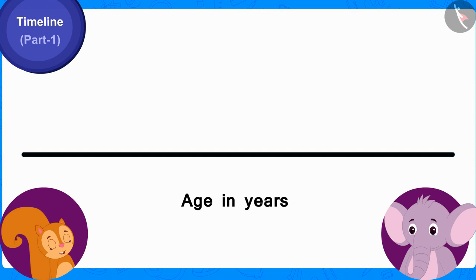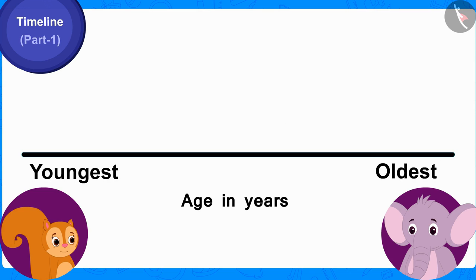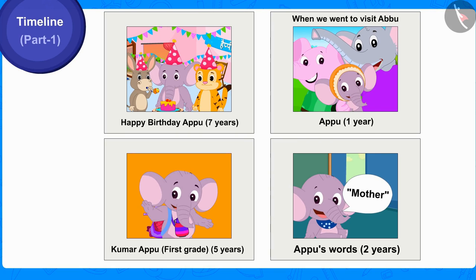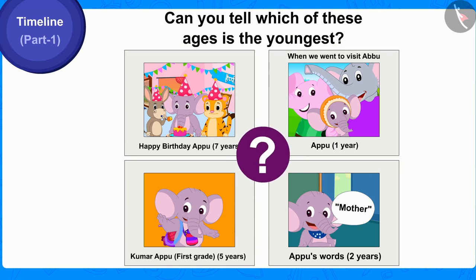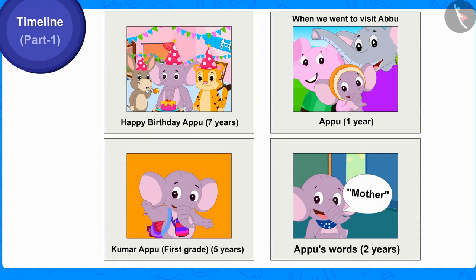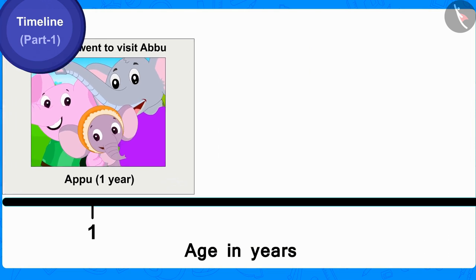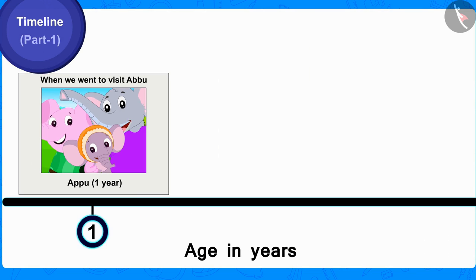Children, here we have four pictures of Appu and his age in those pictures. Can you tell which of these ages is the youngest? Correct! Out of these, the picture of Appu taken when he was one year old will be shown first on the timeline, by writing 'one year' on it.